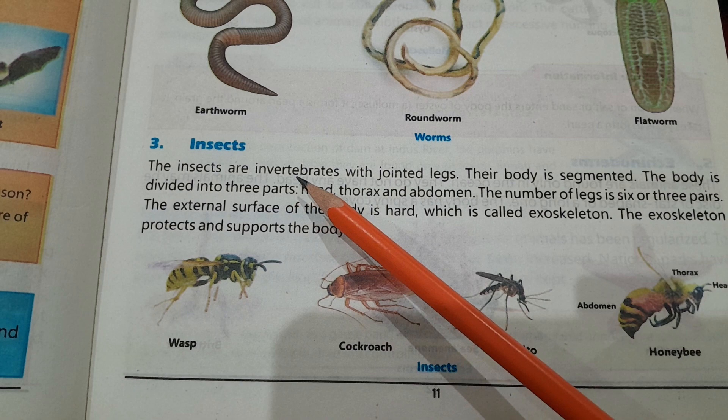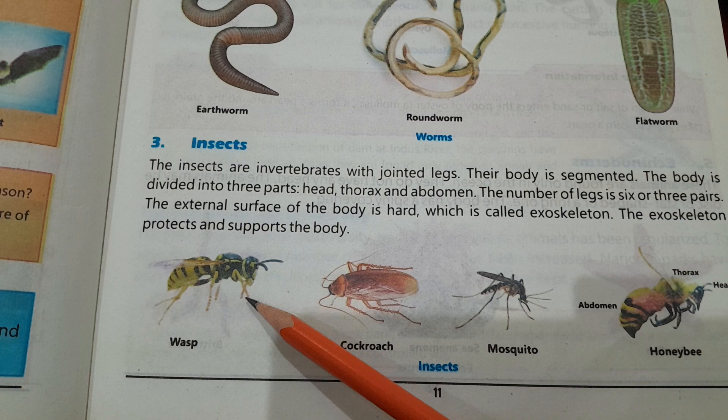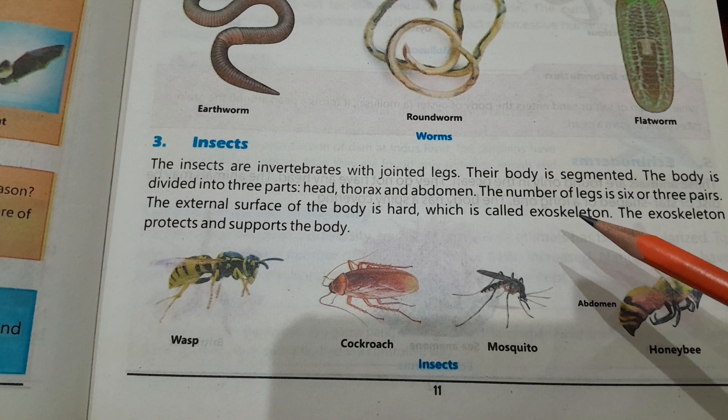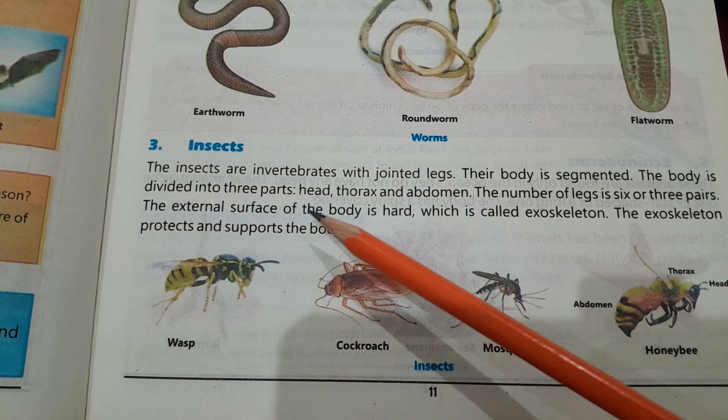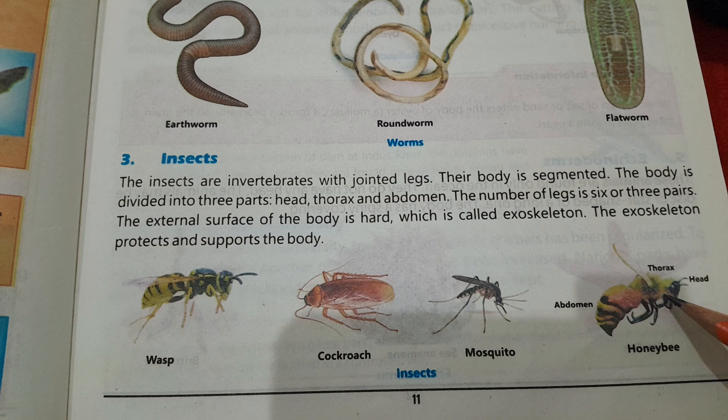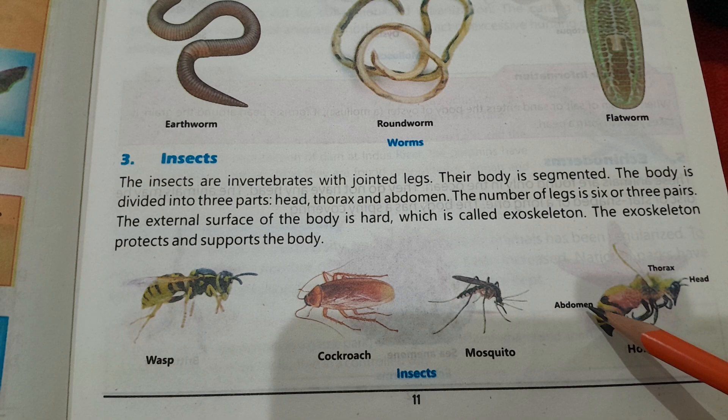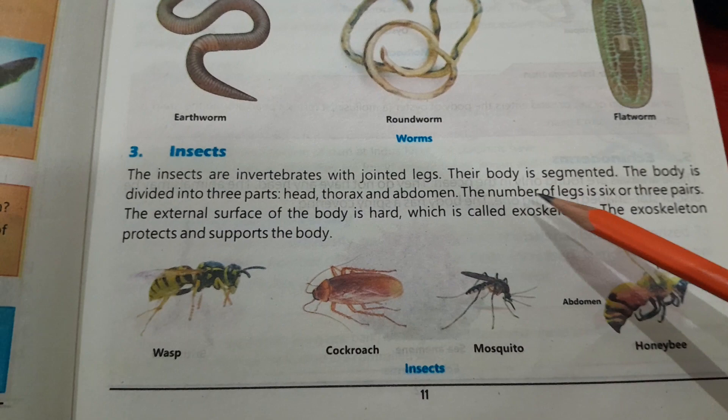Insects — کیڑے مکوڑوں کو insects کہتے ہیں — are invertebrates with jointed legs. Their body is segmented and divided into three parts: head, thorax — درمیانہ حصہ — and abdomen — پیچھے والا حصہ۔